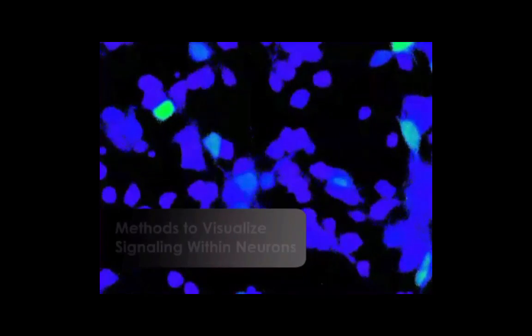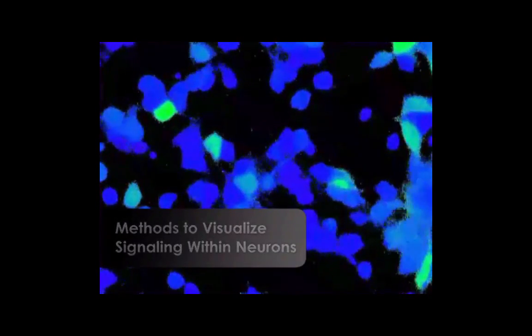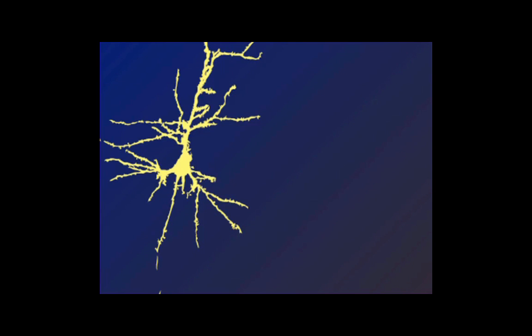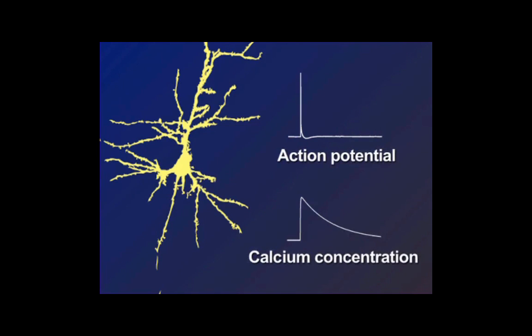Calcium imaging can be used to investigate excitation over the entire neuron. Neurons are loaded with a dye that changes its fluorescence in response to an elevated calcium concentration within the cell. While intracellular calcium has many functions, calcium imaging can be used as an indirect measure of action potentials, as shown with this example neuron.